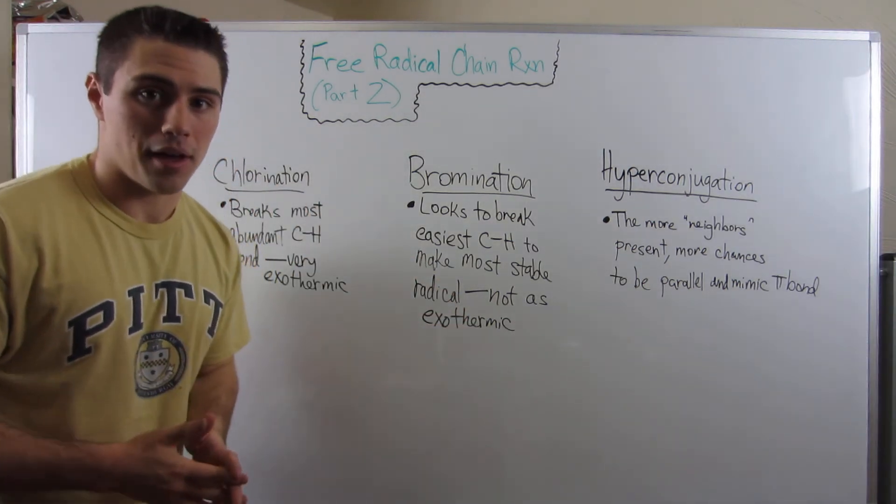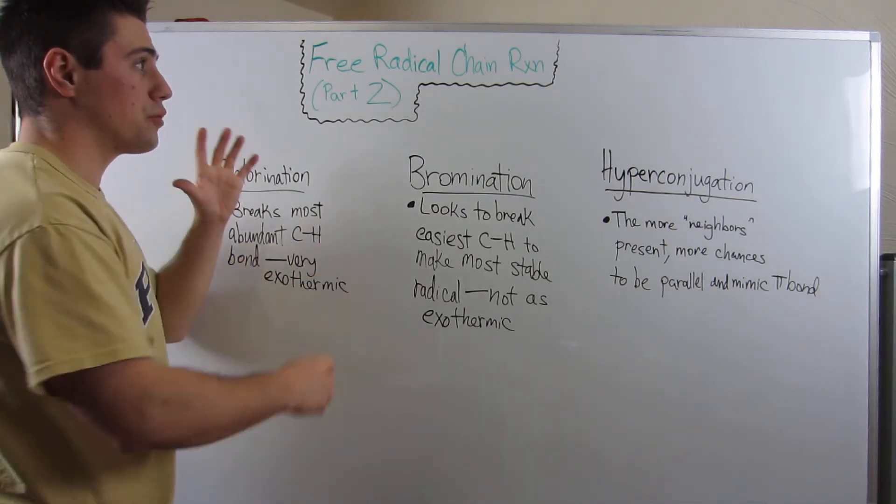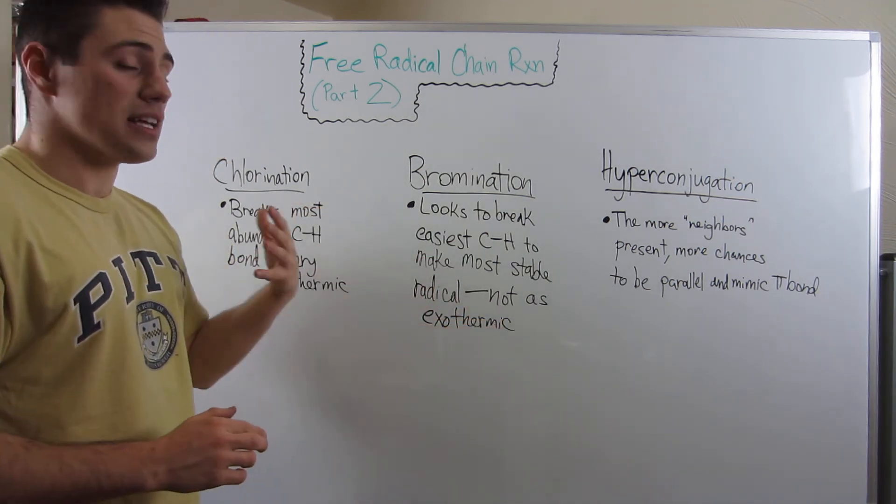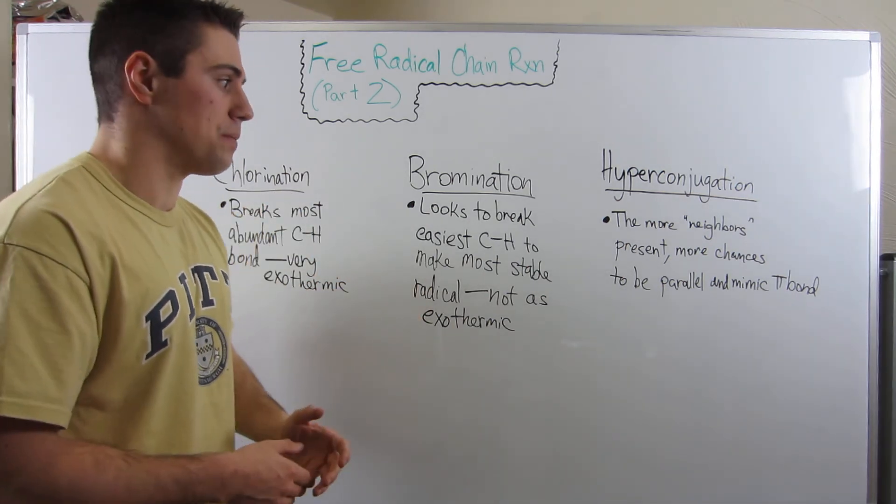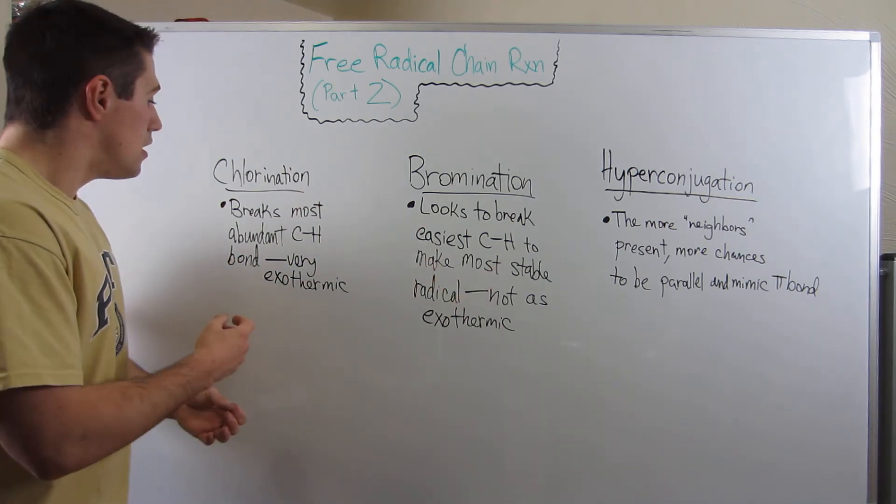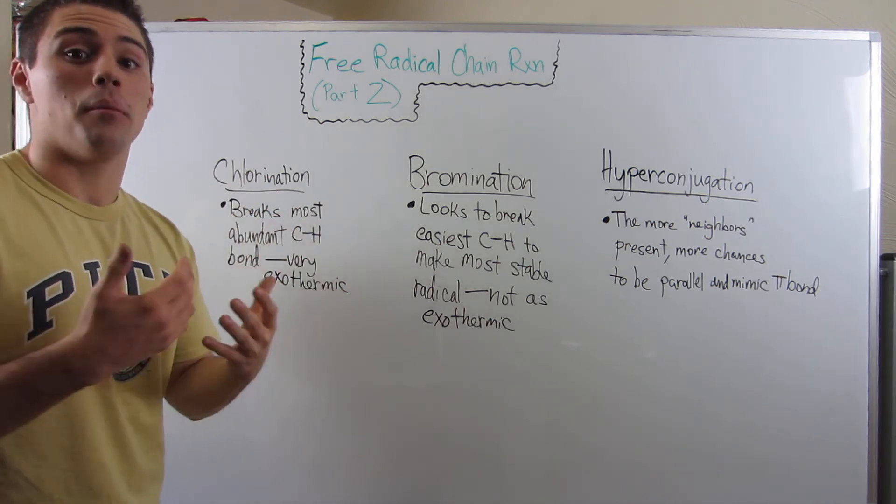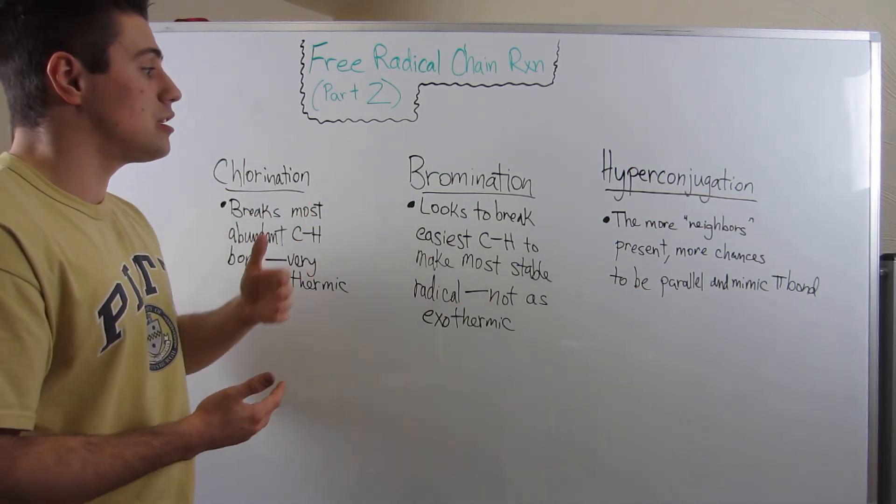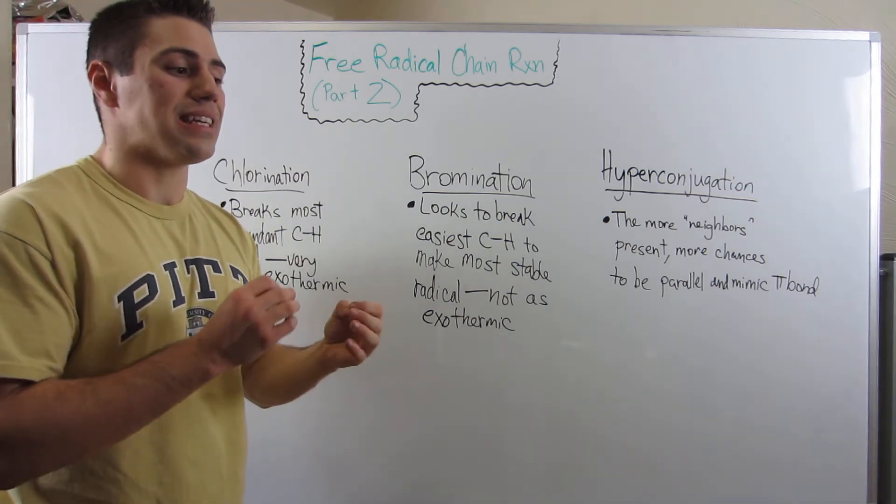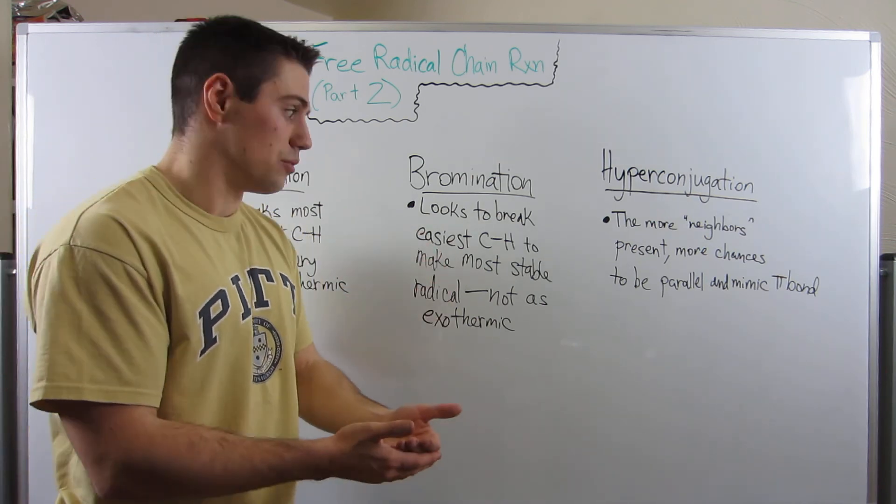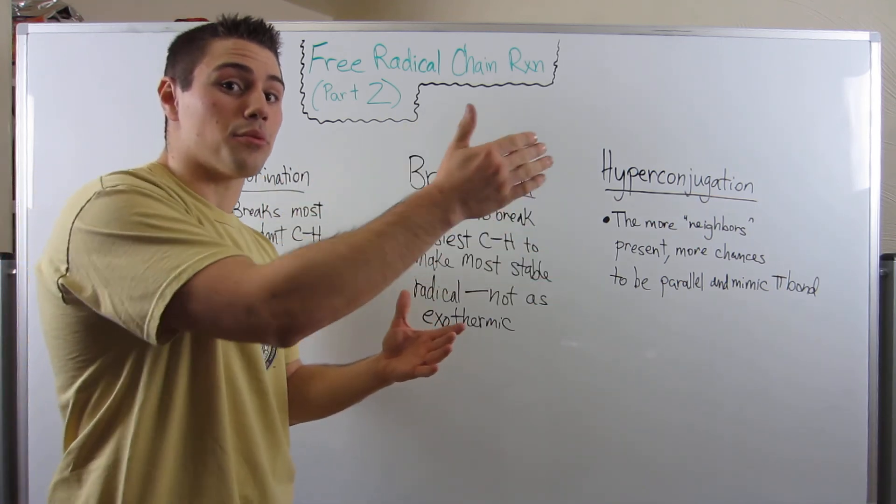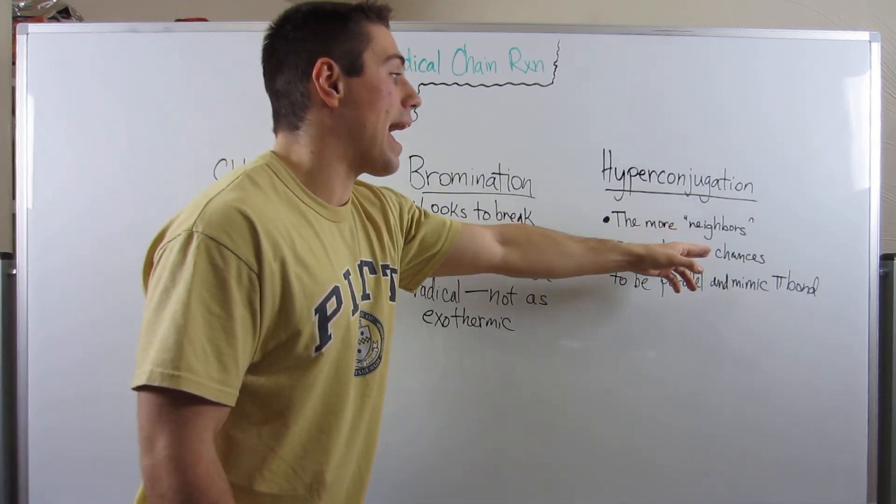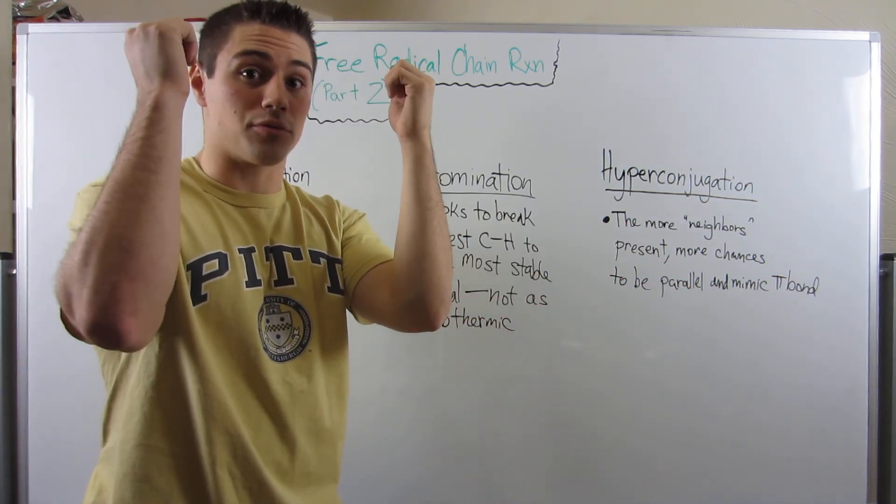I'm going to try and rehash everything we just talked about in this video. Remember, chlorination, bromination, both free radical mechanisms. We established that chlorination is very exothermic. It happens very quickly. Bromination, on the other hand, it's less exothermic. It's not as rapid as chlorination. And as a result of that, what we just discussed, remember, chlorination, it looks to break the most prevalent, the most abundant CH bond. It doesn't matter if it's going to produce the most stable radical. It's just going to look where there are the most CH bonds. However, bromination, on the other hand, remember, not as exothermic. It's trying to break the easiest bond so the reaction can remain as favorable as possible. So remember, the easiest CH bond to break translates to the most stable radical. And remember, the way we evaluate radical stability is hyperconjugation. The more neighbors you have, the more chances you have to mimic that pi bond and get parallel with an orbital that's rotating. For a radical, it's in an unhybridized p-orbital.